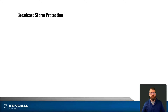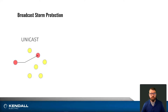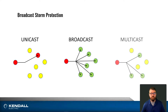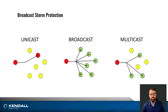Unicast traffic goes from one device to one device — you may hear this referred to as one-to-one communication. Broadcast goes from one device to all devices connected on the network. And finally, multicast goes from one device to several devices that have subscribed to be part of that message group.